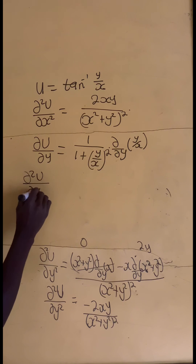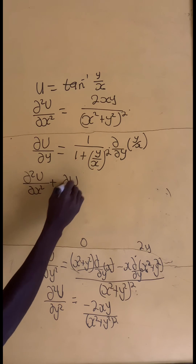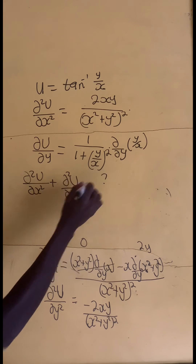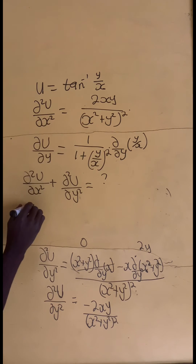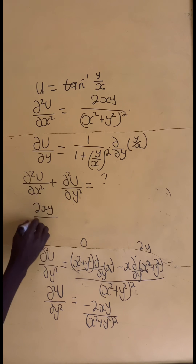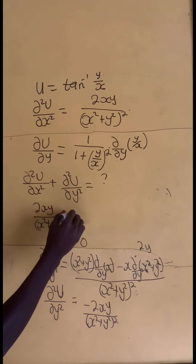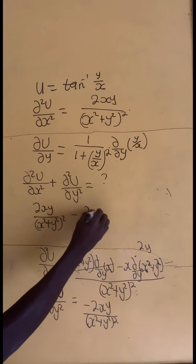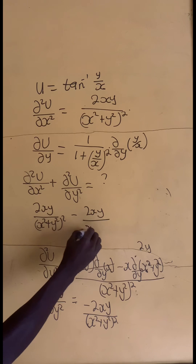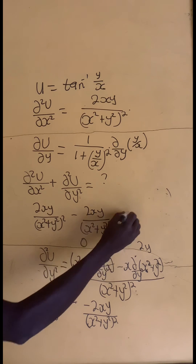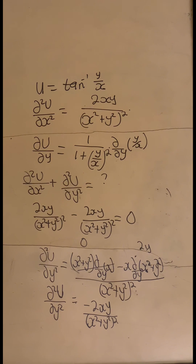So if we add del squared u on del x squared plus del squared u on del y squared, what do we get? We take 2xy divided by x squared plus y squared all squared, plus minus 2xy divided by x squared plus y squared all squared. Definitely this gives us 0, hence proved. So now we can clean the question mark and write 0. Thank you for watching.